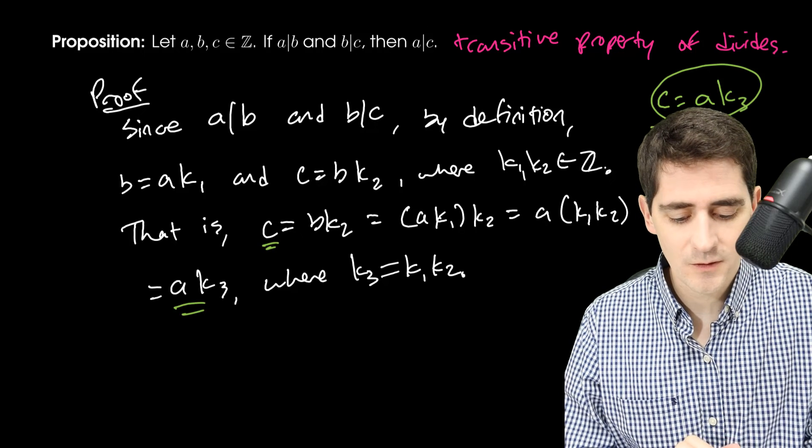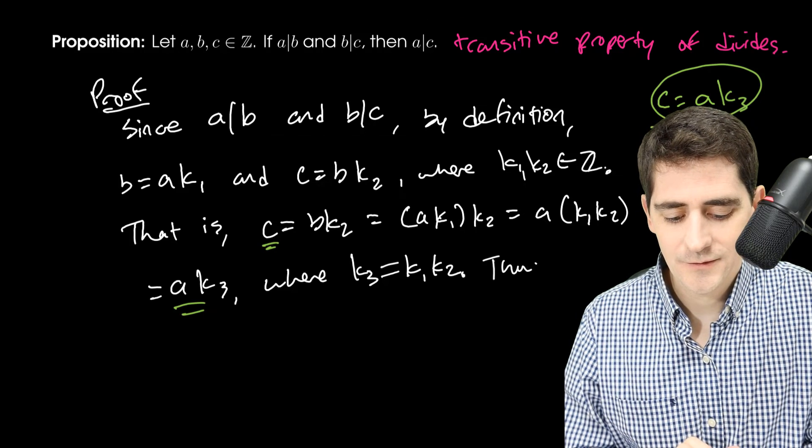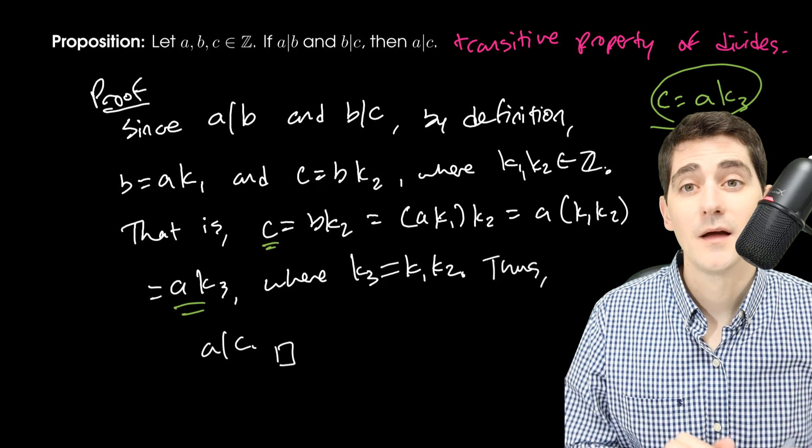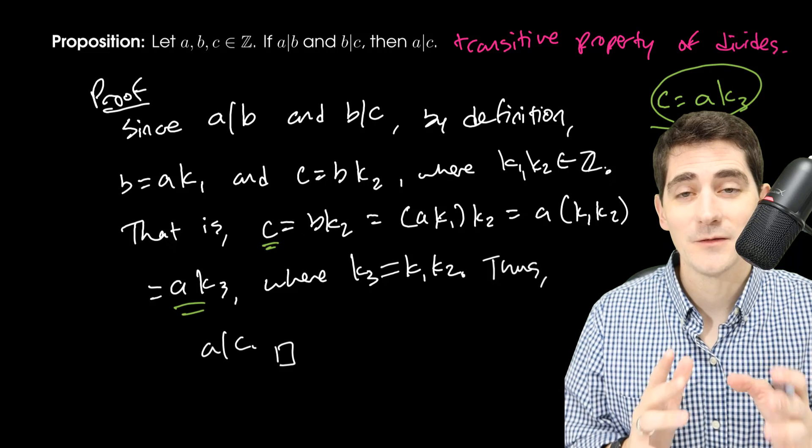So now look what I have. I have C equals A times some sort of integer. Actually, that's exactly what we were shooting for. So thus, A divides C. And we can put our end of proof. Transitive property of divides.